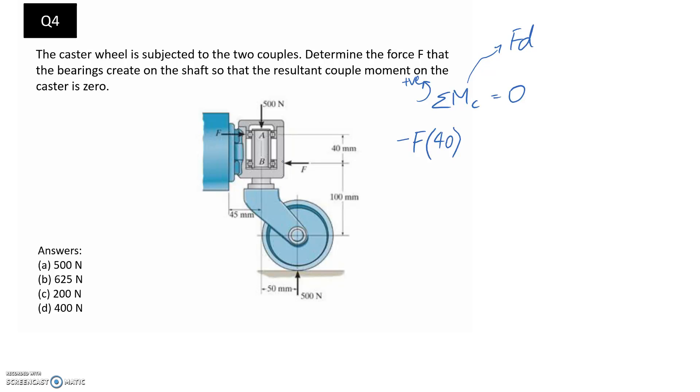So now we just need to focus on the other couple, which is created between these two forces here. So F for these is going to be the 500 newtons. And the separation distance, again we're looking for the perpendicular or the shortest distance between them, it's going to be the 50mm that we see here.